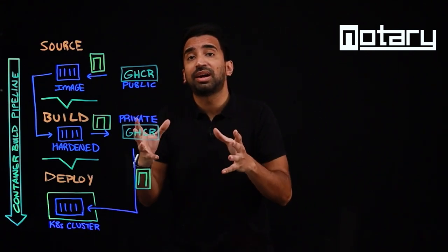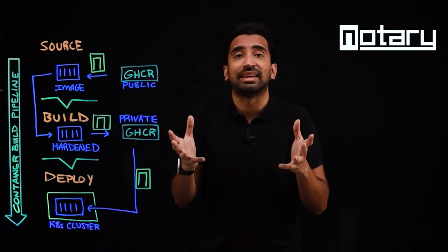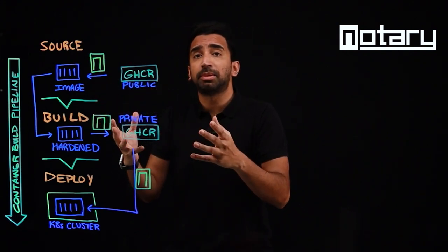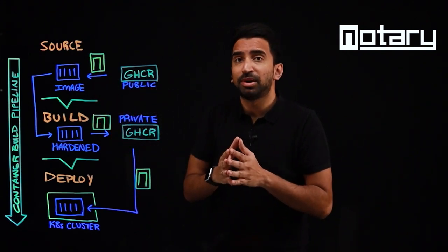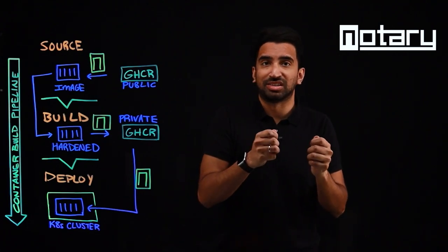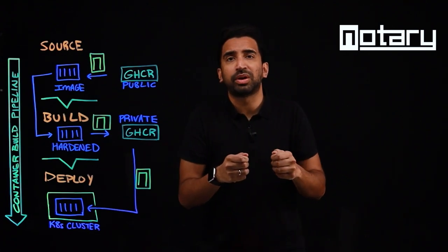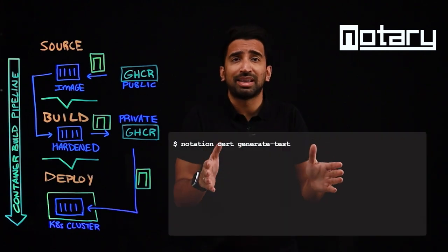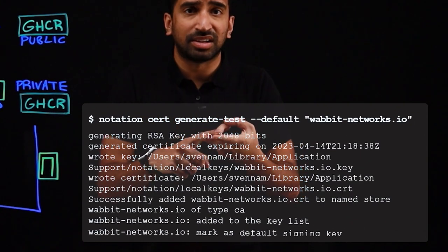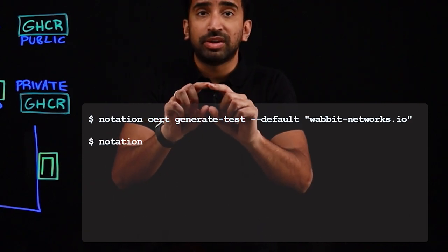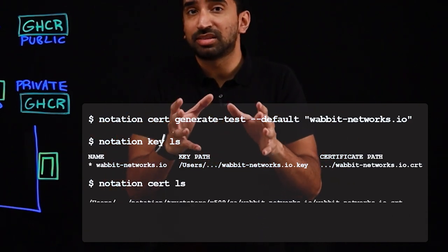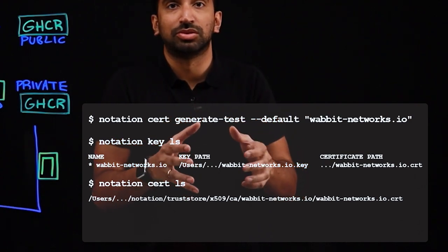To start this process, you'll first need a signing key. For local testing and development purposes, Notation will help us by creating a self-signed x509 certificate. We can run the following commands to generate a test key and a self-signed certificate, then we can view the generated key and confirm that the certificate is in the trust store.